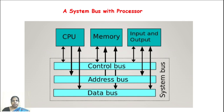The data bus transmits data from or to the processor — it is a bi-directional bus. The control bus, also called the command bus, carries control and synchronization signals and is also bi-directional. These signals travel in either or both directions in the system. The processor is connected to memory and I/O devices through the system bus.